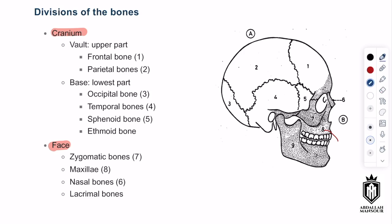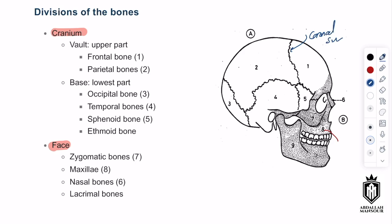You can name the sutures using the bones they connect. At the top, the coronal suture runs coronally between the frontal and parietal bones. At the back is the lambdoid suture. Between the parietal and temporal bones is the temporoparietal suture, and between the sphenoid and temporal bone you can name the suture accordingly — just take the two bones' names and call it a suture.